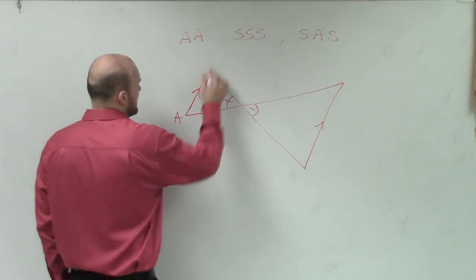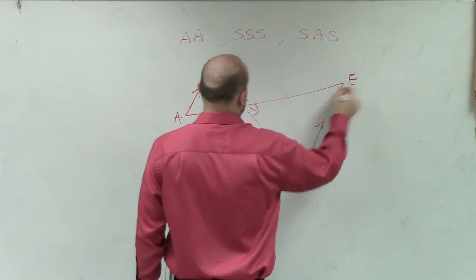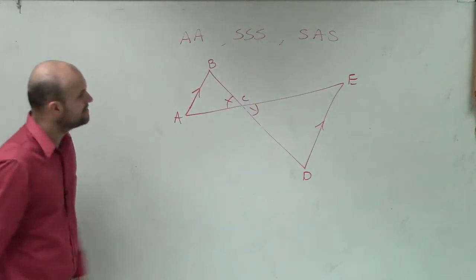Oh, let me write this down. So I'd say A, B, C. And let's call this D, E, D. OK? So we know those are equal.